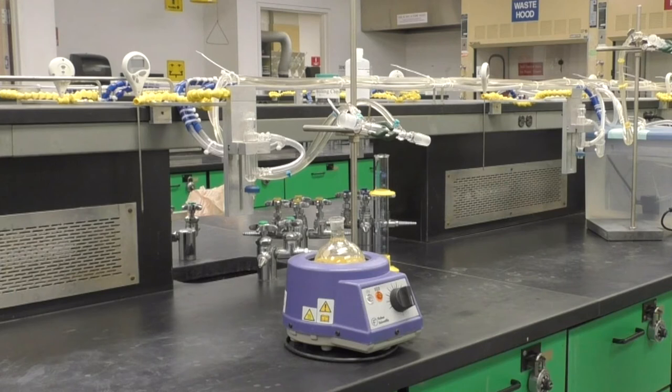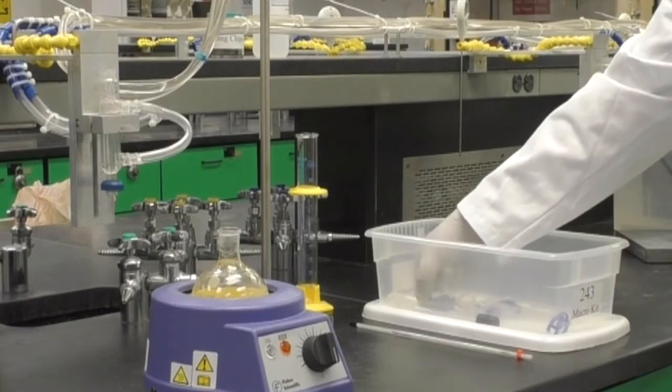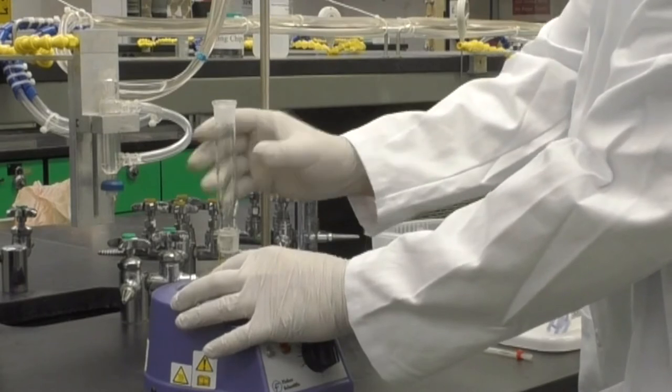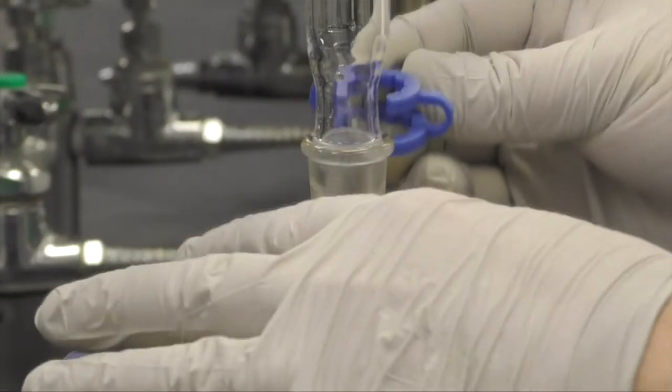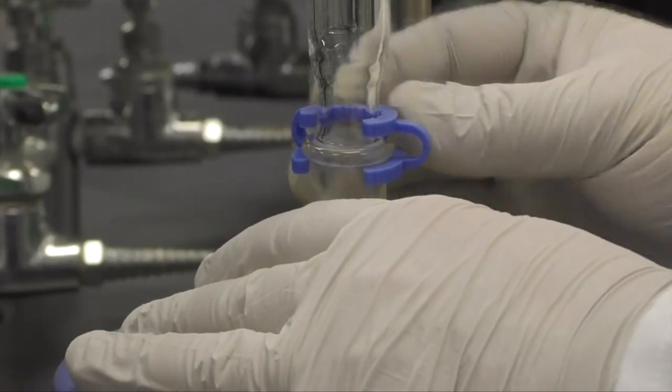You are now ready to assemble the distillation setup. The water-cooled condenser has already been set up on your bench. Place the fractionation column onto the neck of the round bottom flask. Secure it by pushing one of the Keck clips over the area where the two pieces meet.